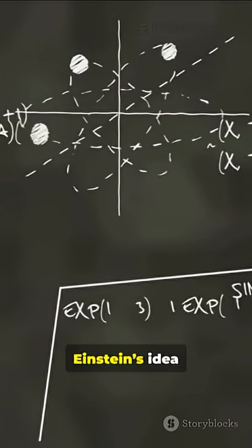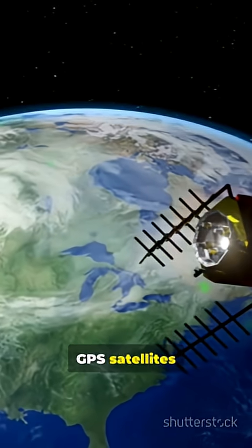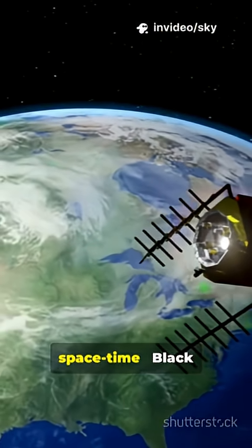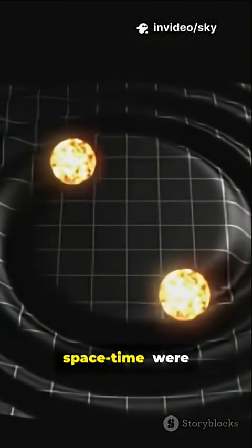But we've tested Einstein's idea millions of times. GPS satellites adjust for curved space-time. Black holes bend light. Gravitational waves, ripples in space-time, were detected in 2015.